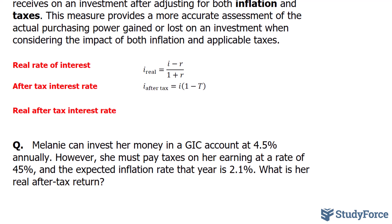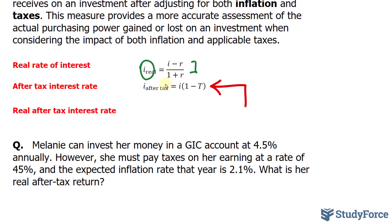In a previous video, we looked at the real rate of return, which is the impact inflation has on one's return on an investment. For that, we used this formula right here, where I represents the interest we expect to earn and R represents the inflation rate. By substituting those two values into this formula, we get the actual or real interest rate. The formula underneath addresses what we do when there is an expected tax on the interest rate.